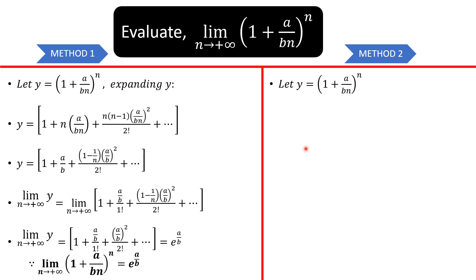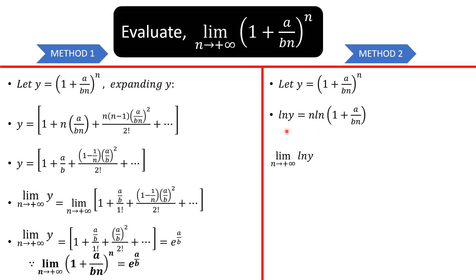For method 2, we again let y equal this expression: (1 plus a over bn) raised to the power n. We take the natural log on both sides, getting ln y equals n times ln of that expression. Then we take the limit as n tends to infinity on both sides, so the limit as n tends to infinity of ln y equals the limit as n tends to infinity of the right-hand side.